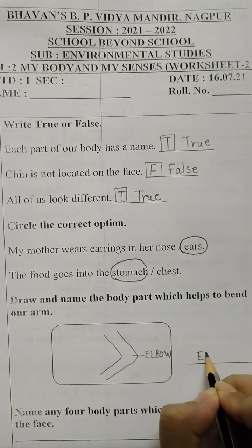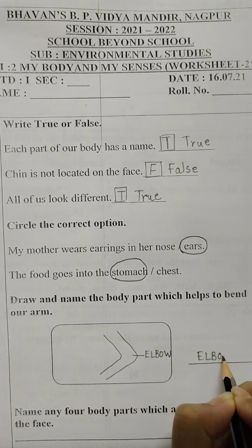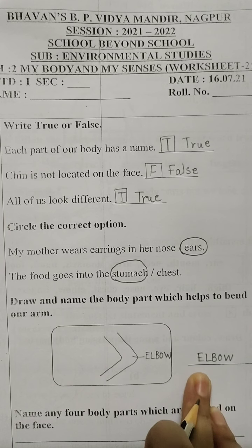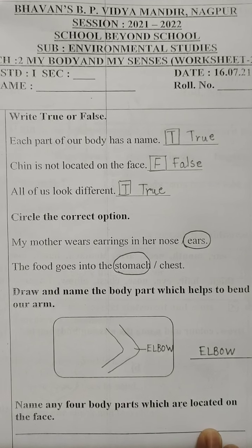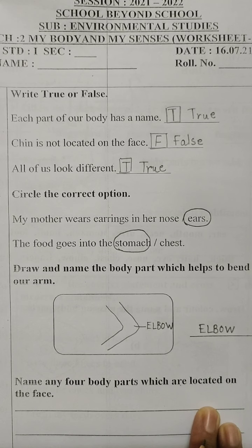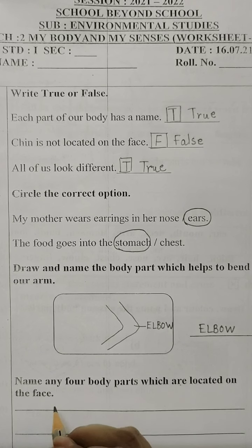So I have drawn here the elbow and I am writing elbow also here on the line given. Now students, the next question says name any four body parts which are located on the face.